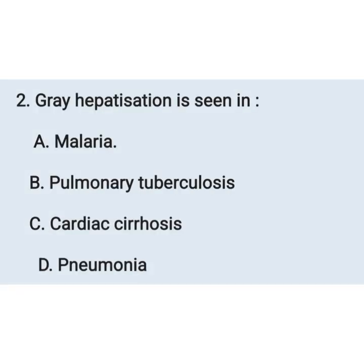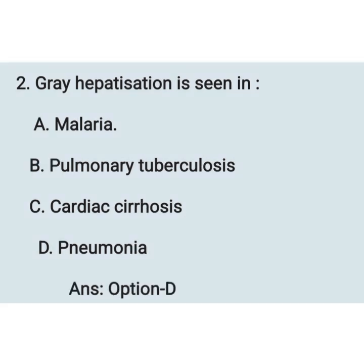Next question: gray hepatization is seen in — option A: malaria, option B: pulmonary tuberculosis, option C: cardiac cirrhosis, option D: pneumonia. Gray hepatization is a feature of pneumonia — option D is the correct answer.